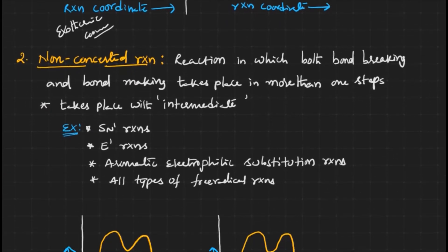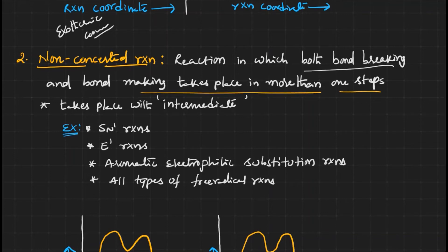Now let us see the second type: the non-concerted reaction. This reaction takes place in multiple steps — bond breaking and bond making take place in more than one step. These are known as non-concerted reactions. In non-concerted reactions, intermediates are present. Examples include SN1, E1, aromatic electrophilic substitution reactions, and all types of free radical reactions.